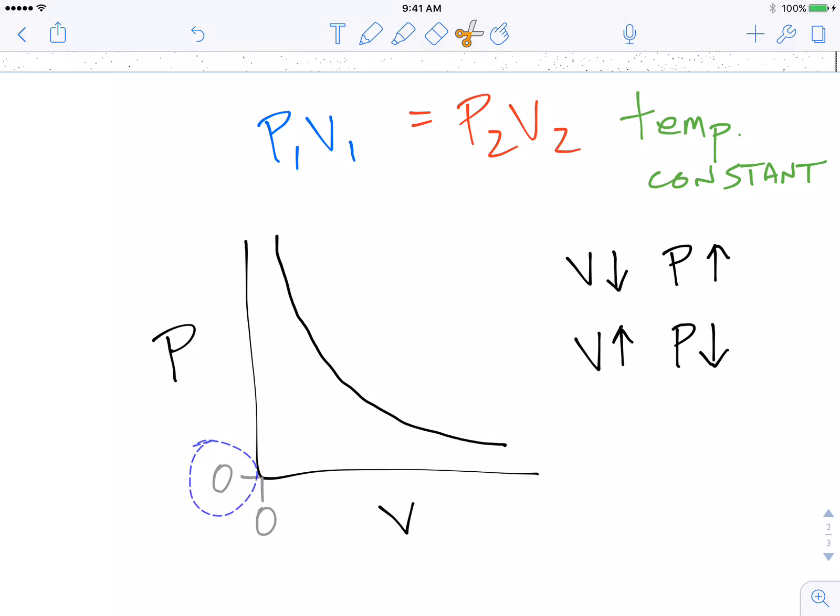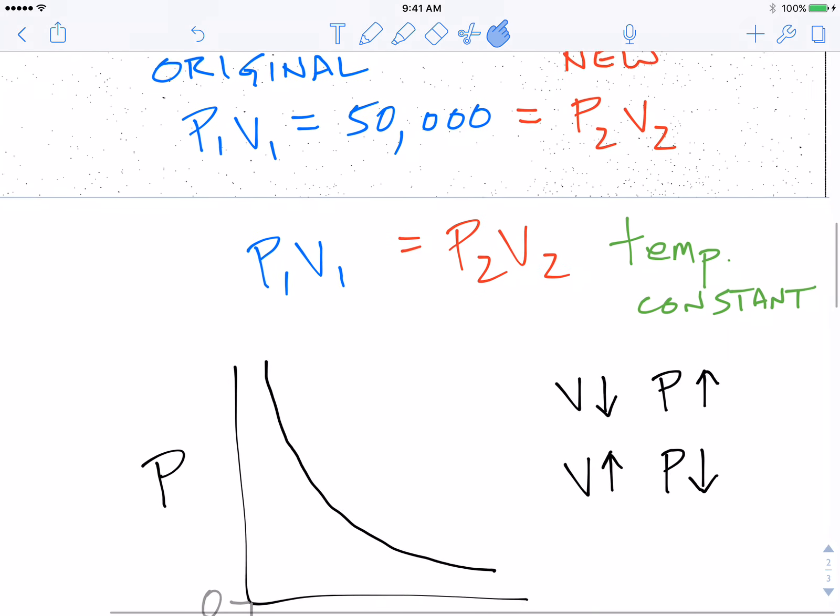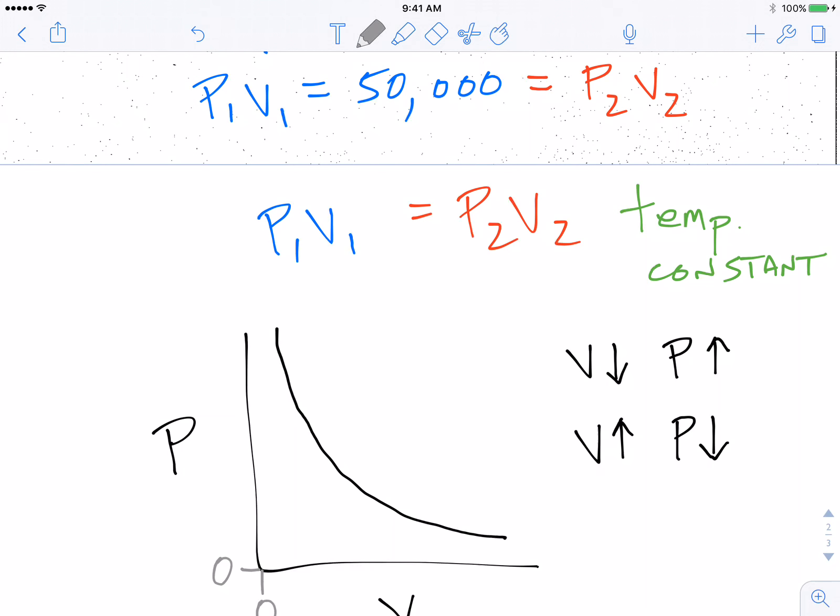With that in mind, that explains why this graph is a curve and not a straight line. Hopefully that's explained the ideas behind Boyle's Law, how we arrive at the formula for Boyle's Law, which is right here, P1V1 equals P2V2 at a constant temperature.